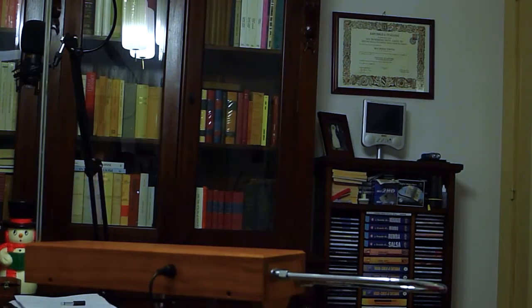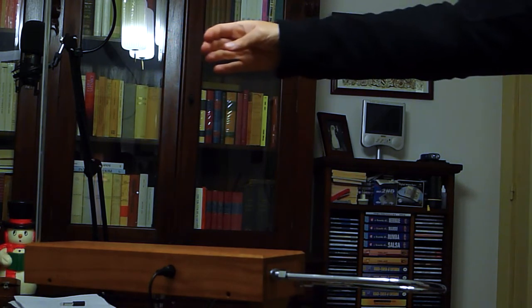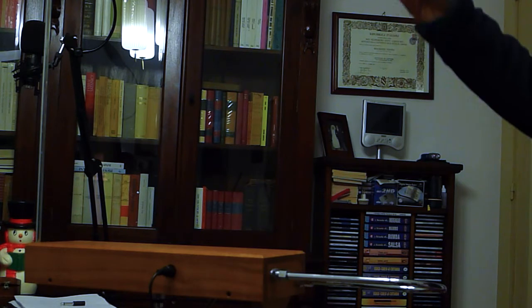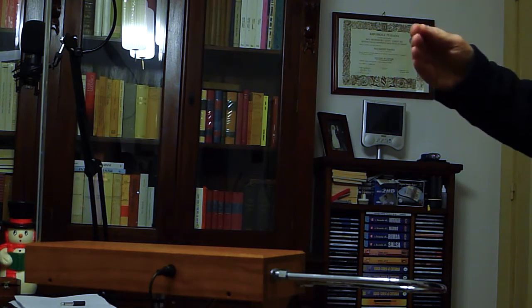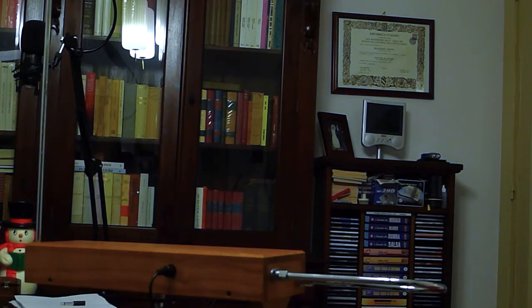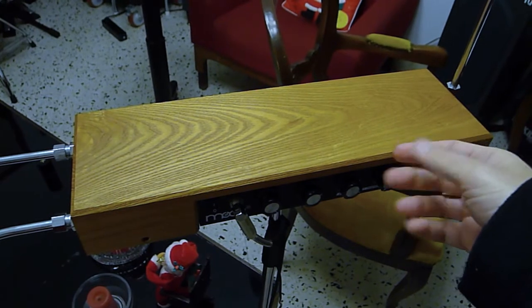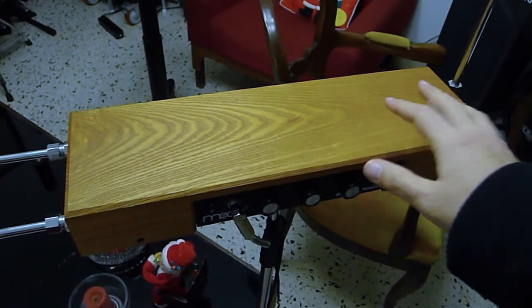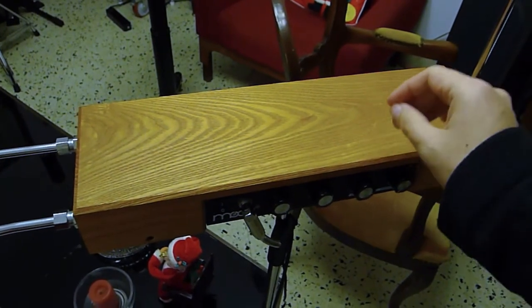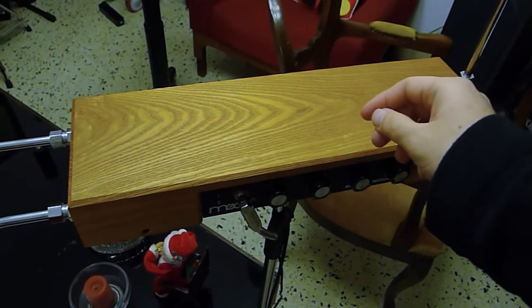The ideal zero-beat or silent location, where the pitch knob is in its center position and when cover is installed, is at about 60 cm from the pitch antenna. Consider that the cover, which has nine hidden metal screws, influences the pitch field. A zero-beat distance of 10 cm is correct for an Etherwave without cover.